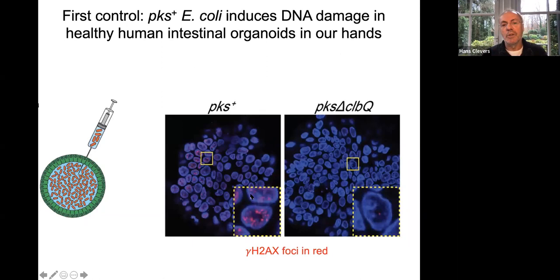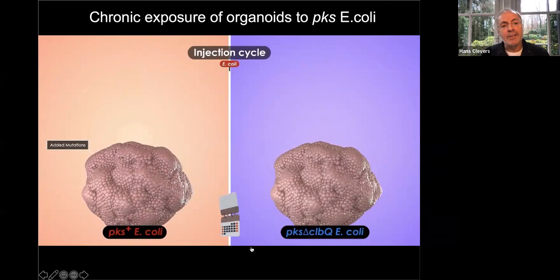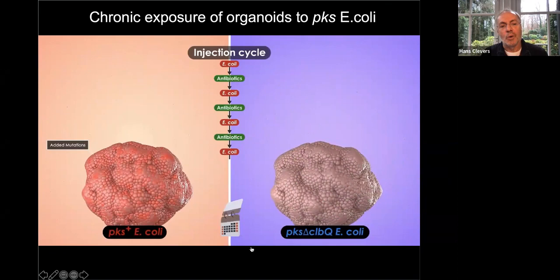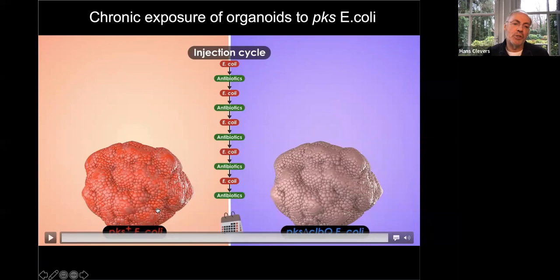We leave the bacteria in for one to two days. If we inject the bacteria with the complete pks island, we get lots of double-strand breaks visualized by gamma-H2AX staining; with the negative control there was essentially a single double-strand break in the entire culture. For the main experiment, they injected multiple times every Monday, then on Fridays cured the organoid cultures with antibiotics before passaging. Every Monday they again injected E. coli. They did this for about three months.